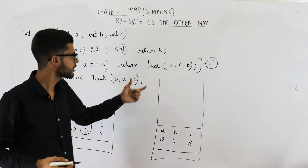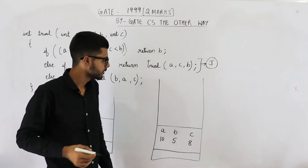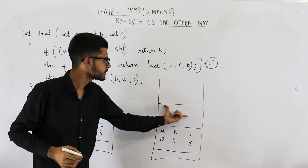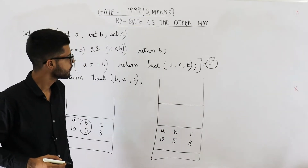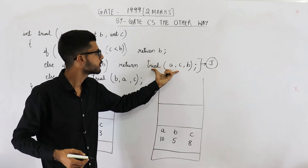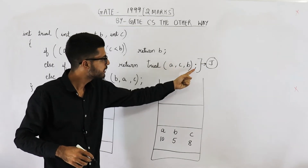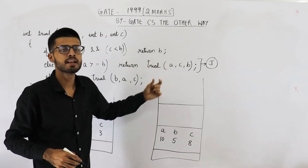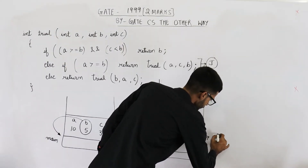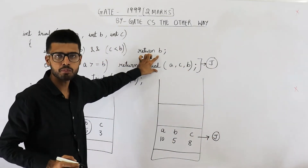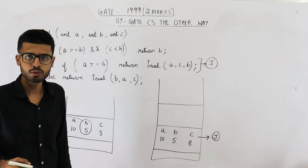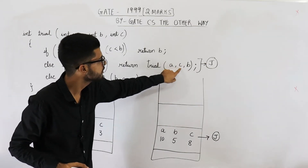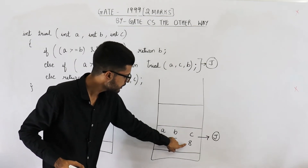In line number J there is a function call. Whenever any function is called, an activation record for the new function has to be pushed. Suppose this activation record is pushed for this function call. Whenever this new function returns something, that value is written in place of this function call, so we resume from line number J. To this new function we are passing A, C and B — that means values 10, 8 and 5.